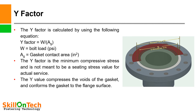Y factor: You can see a picture of a flange face where the raised face OD is shown, the gasket face is shown, and this is the gasket area. The Y factor is calculated using the following equation: Y = W / Ag, where W equals bolt load in psi and Ag equals gasket contact area in square inches. The Y factor is the minimum compressive stress and is not meant to be a seating stress value for actual service. The Y value compresses the voids of the gasket and conforms the gasket to the flange surface.